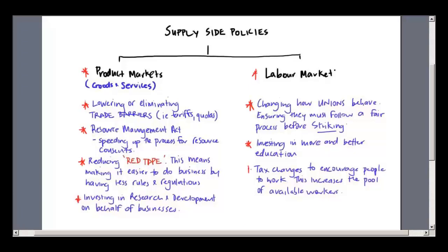Finally, there are some tax changes. The government is always looking at ways to change the tax rules to create an incentive for people to come to work — to provide some tax relief for people just coming into the workforce or who are on low incomes, to encourage them to move away from benefits and come into work. This increases the number of available workers in the market, which reduces costs for firms, leading to an increase in aggregate supply.